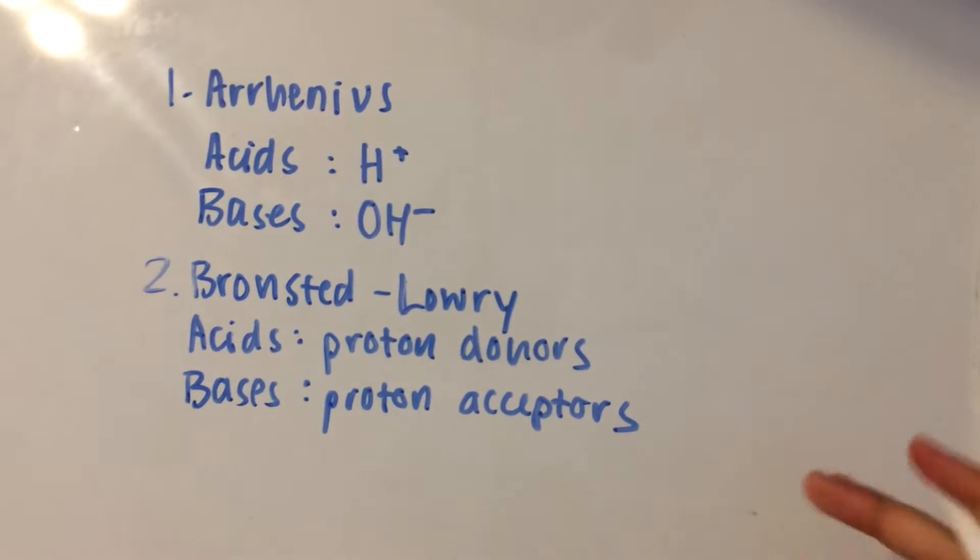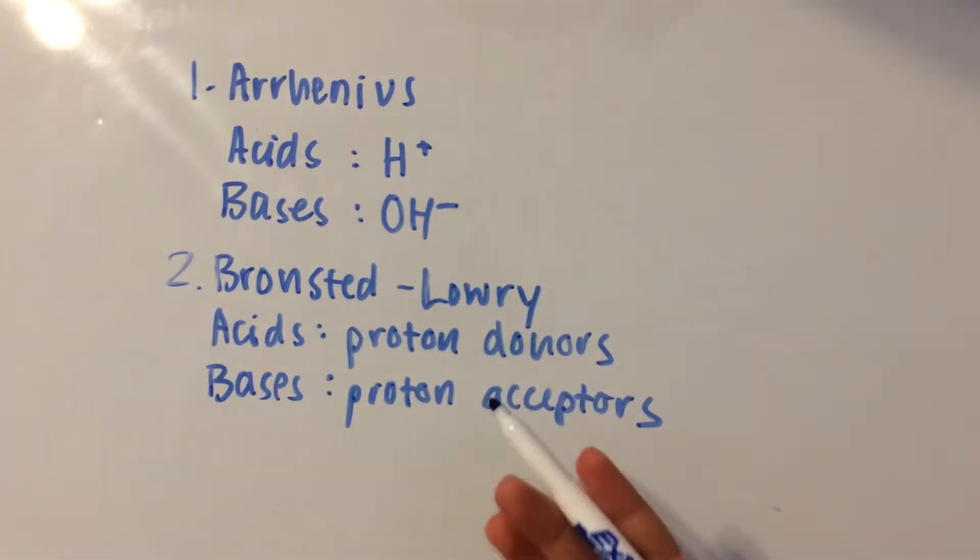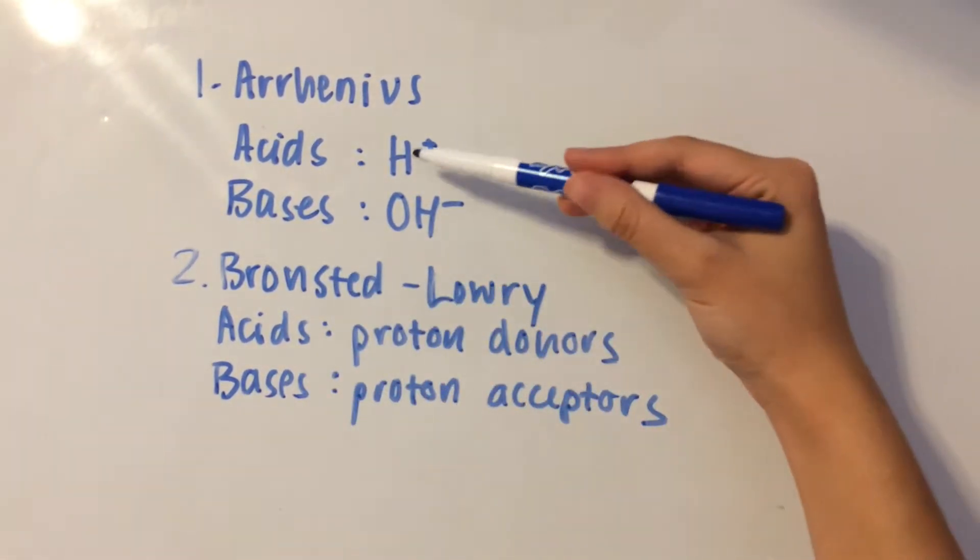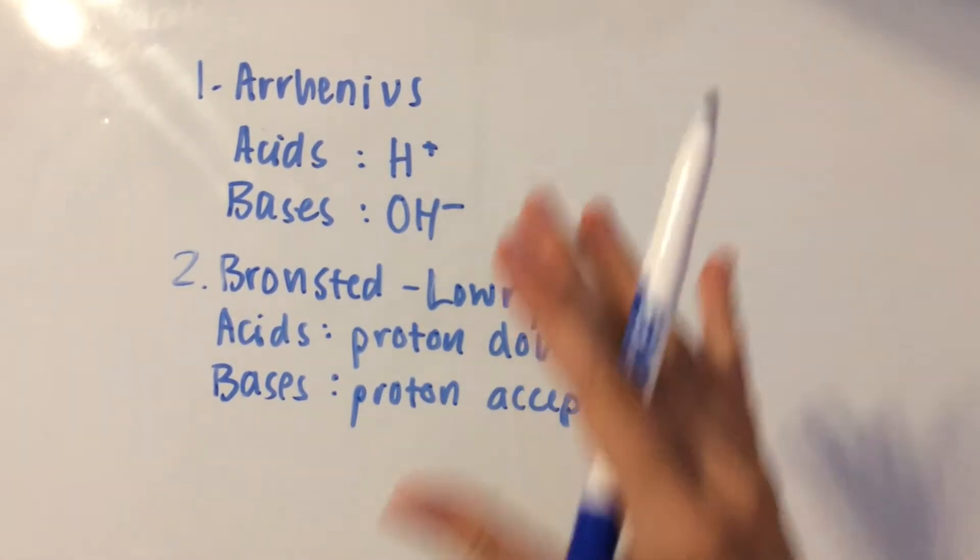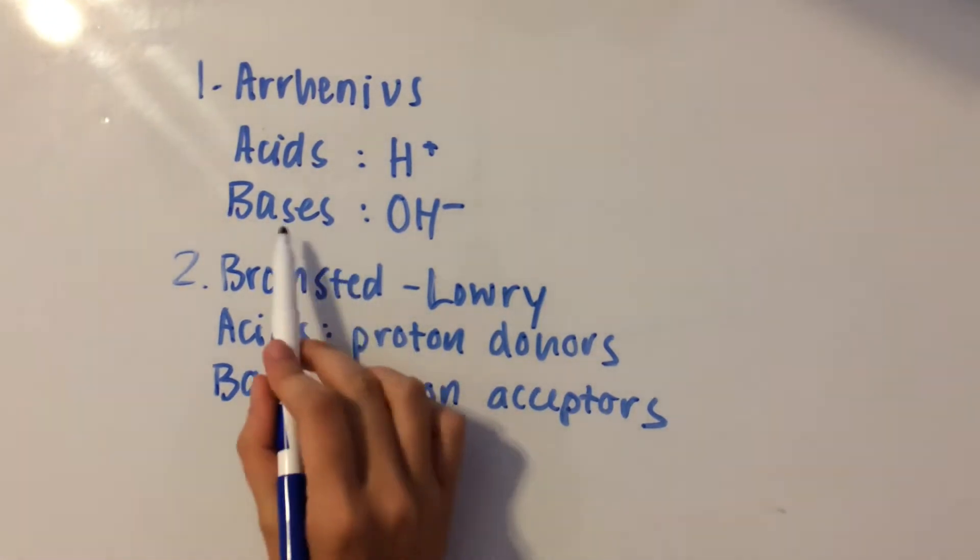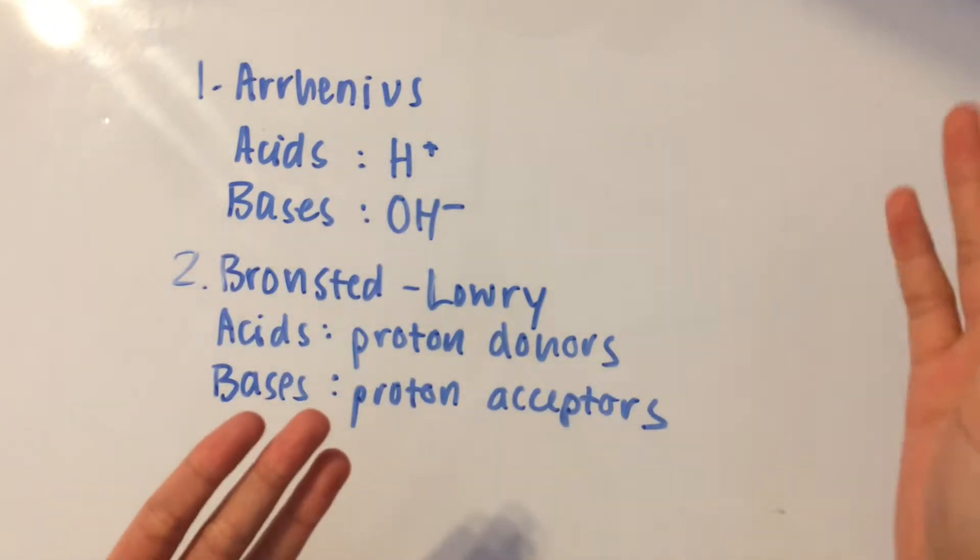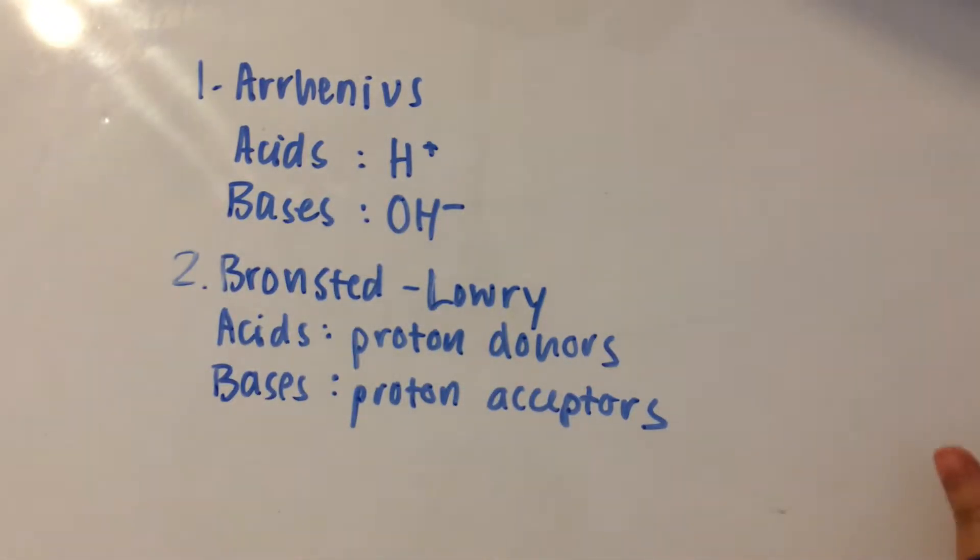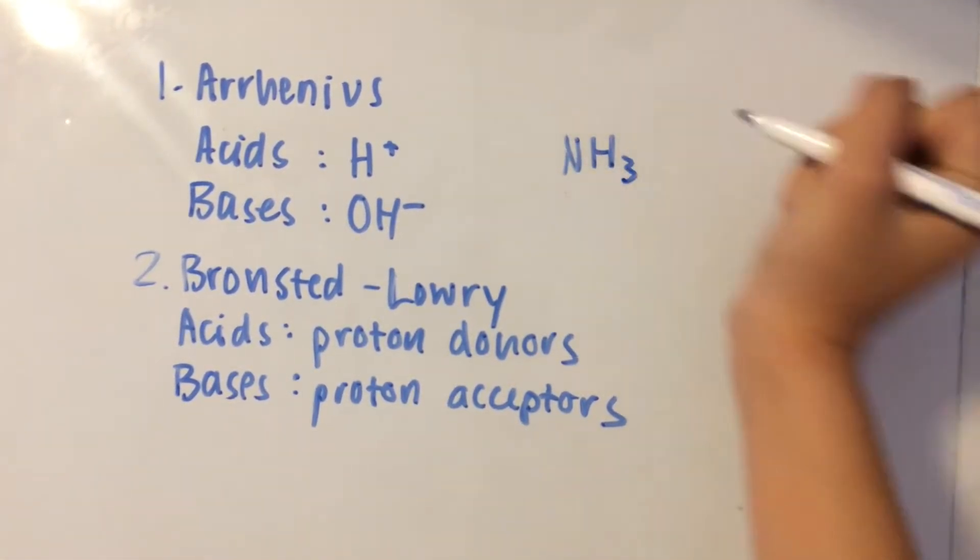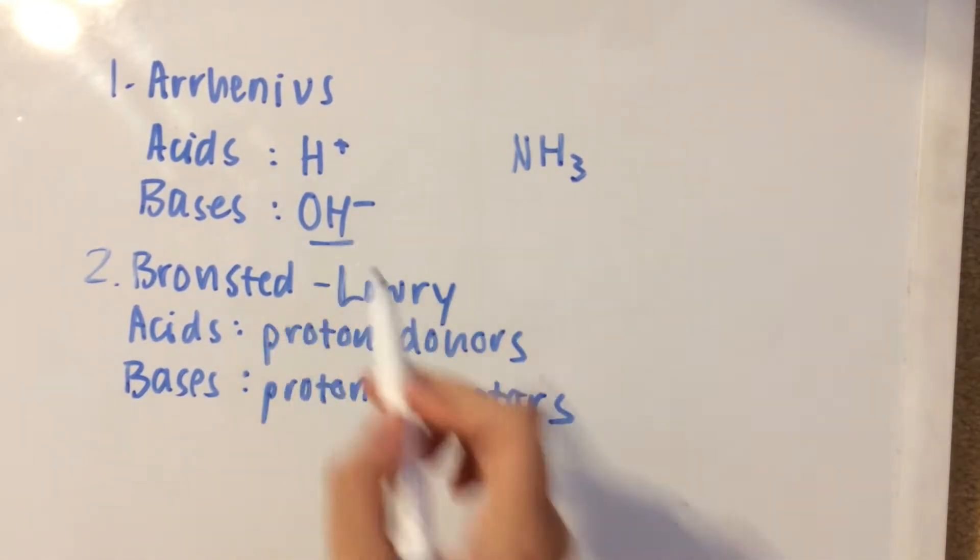The reason why the Arrhenius theory isn't as widely accepted is because it assumes that H plus is in the acid for the acid to add H plus into the solution. And the base has OH minus in it for it to directly add OH minus into the solution. But as you can see with NH3 for example, this is a base but it doesn't have OH minus in it.